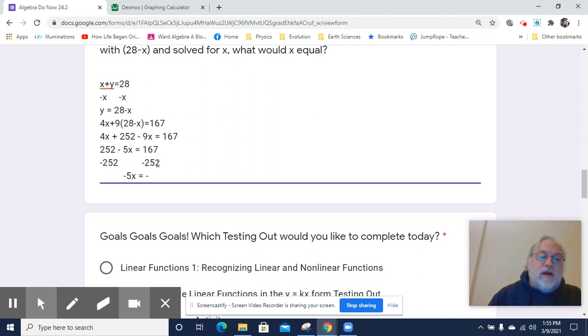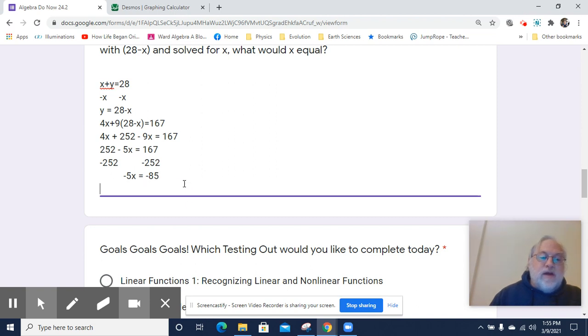2 minus 7. I'll have to borrow from the 5. So that's going to be 12 minus 7, which will be a 5. And then I borrowed from the 5, so that's a 4. 4 minus 6. I'll have to borrow from the 2, and that'll make it a 14. 14 minus 6 is going to be 8. And I borrowed from the 2, so that was a 1. So 1 minus 1 is just nothing. So I've got negative 5X equals 85. If you want to, you can just cancel both of those negatives. I'm not going to, but you could.